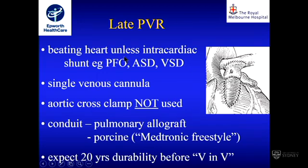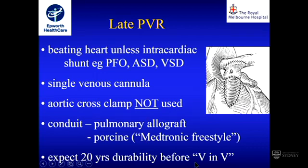We do pulmonary valve replacements on a beating heart, unless there is an additional shunt such as a PFO, ASD, or VSD — because air can suck through the residual shunt during beating heart surgery. Mostly we've managed with a single venous cannula without aortic cross clamp, using either pulmonary allografts or porcine valves, expecting about 20-year durability before the next procedure, which would hopefully be a valve-in-valve. Reconstruction involves a new pulmonary conduit with an outflow tract augmentation patch to help flow into the new pulmonary valve.